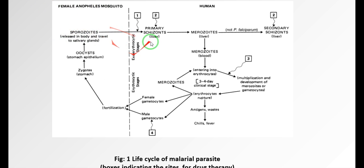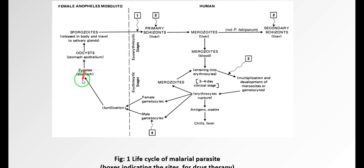The exo-erythrocytic stage is completed in the liver - this is the asexual phase called schizogony. The sexual phase is completed in the stomach of the mosquito and is called sporogony. A vector is an organism that does not cause disease itself but spreads infection by conveying a pathogen from one host to another host. Here you have two hosts: the human and the mosquito.